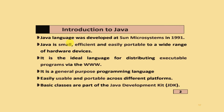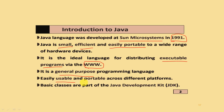In the first point, it is introduction to Java. The Java language was developed by Sun Microsystems in 1991. The Java IDE is small, efficient, and easily portable to a wide range of hardware devices. It is an ideal language for distributing executable programs using the World Wide Web. It is a general-purpose programming language, easily usable and portable across different platforms. Java classes are part of the JDK - the Java Development Kit.